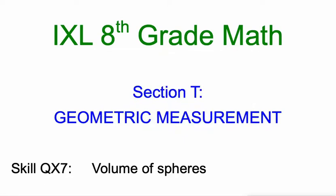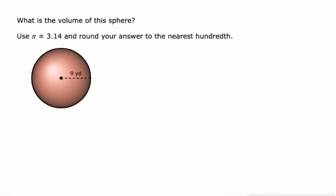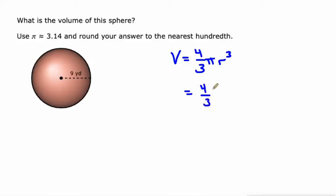Hello, Mr. Kaczynski here with you. We're gonna do volume of spheres today. Pretty simple if we know the formula. And the formula for volume of a sphere is four thirds pi r cubed. So on this one we're gonna do four thirds and we're gonna use 3.14 for pi as instructed — that's an approximation of pi.